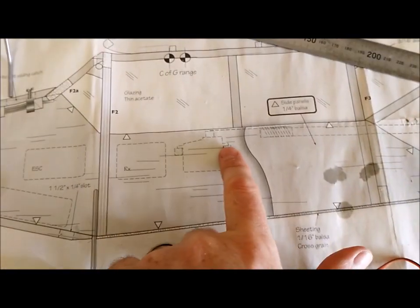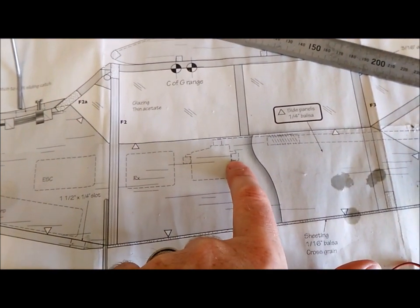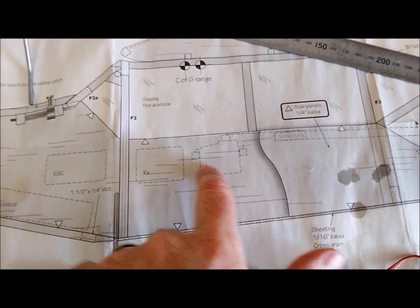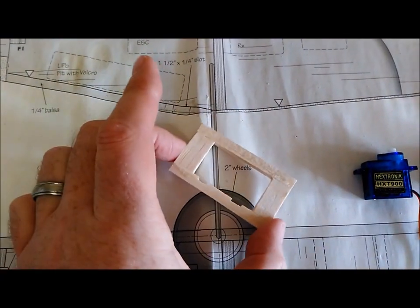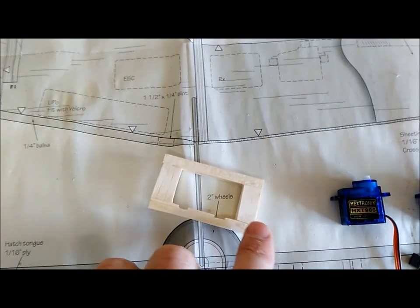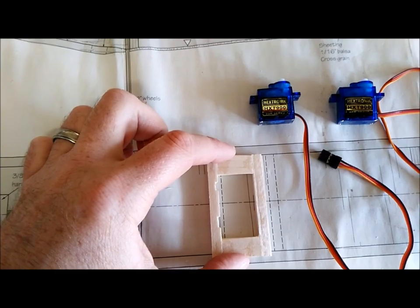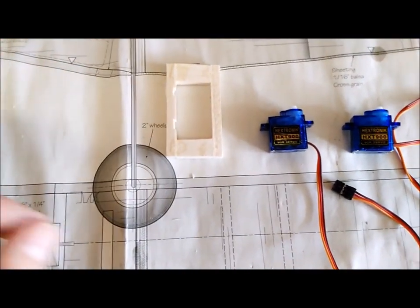Now in order to install these into the fuselage I need to put in two cross beams, a servo tray essentially which will hold the two servos in place. So I've simply put together a couple of square pieces of balsa with stiffeners at either end and that will fit perfectly across the fuselage and hold the servos in place.